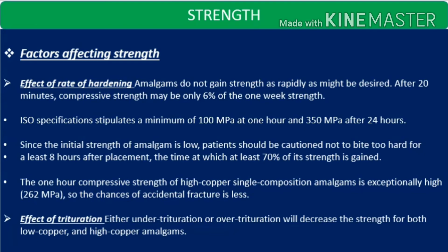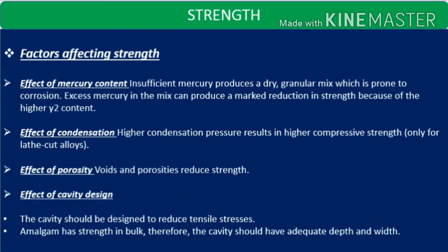Effect of trituration: both under-trituration and over-trituration are going to decrease the strength for low copper and high copper amalgams. Effect of mercury content: insufficient mercury produces a dry, granular mix — a dull mix prone to corrosion. Excess mercury produces a marked reduction in strength because of higher gamma 2 content.